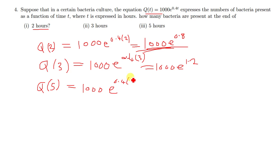Which will give you 1000 e raised to power 0.4 times 5, which gives you 2. So it's 1000 e raised to power 2.